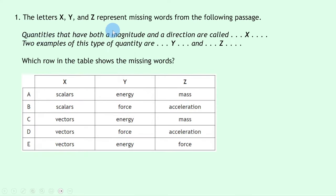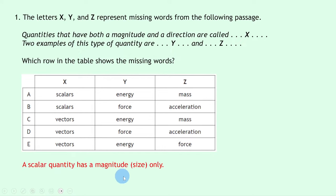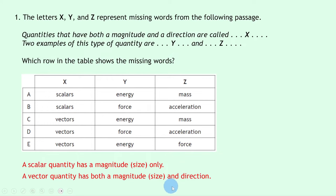Question 1 says the letters x, y and z represent missing words from the following passage. Quantities that have both a magnitude and a direction are called x. Two examples of this type of quantity are y and z. Which row in the table shows the missing words? Well to answer this we need to remember the difference between scalars and vectors. A scalar quantity has a magnitude or size only, whereas a vector quantity has both a magnitude and a direction.